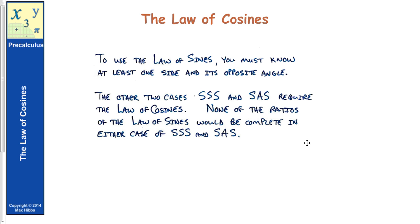We're going to change now from the law of sines to the law of cosines. To use the law of sines, you must know at least one side and its opposite angle. You have to have three pieces of information, and in combination you must have a side and an opposite angle, or an angle and its opposite side.